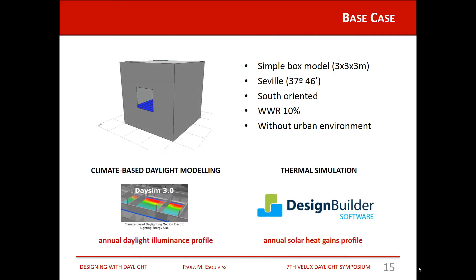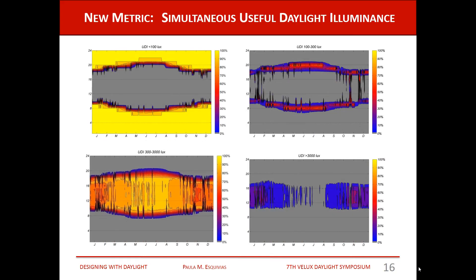In my research, I took a simple box model placed in Seville, south-oriented, with a window-to-wall ratio of 10% and without an urban environment. This model was simulated with DAYSIM and DesignBuilder to obtain the annual illuminance profile and the annual solar heat gain profile. The resulting graphics show the percentage of the work plane within each illuminance range. We can see, for example, that part of the work plane has illuminances higher than 3,000 lux, representing a certain probability of glare, and we can observe when this is occurring in the temporal performance.